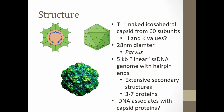The structure was solved through cryo-EM. T equals 1, naked icosahedral capsid from 60 subunits. Since you've all taken Dr. Steadman's tests, you know he likes comparisons — from T equals 1 you can probably figure out your H and K values. Small again, small virions — 28 nanometers in diameter, some of the smallest viruses that infect animals, coming from the Latin word for small, parvis. They have a five-kilobase — in quotes — linear single-stranded DNA genome, and we'll see why linear is in quotes. They have extensive secondary structures with hairpin ends, giving rise to a pseudo-non-linear structure. They typically encode three to seven proteins.